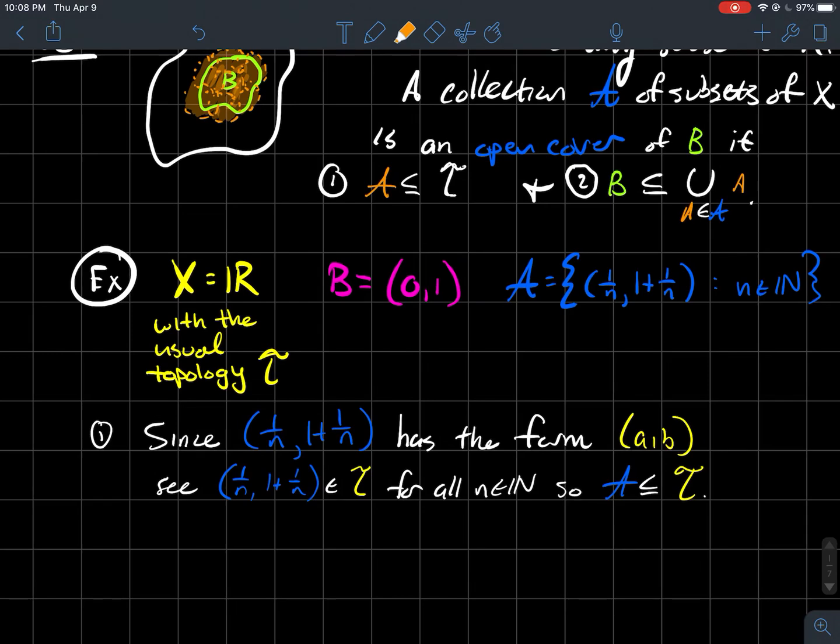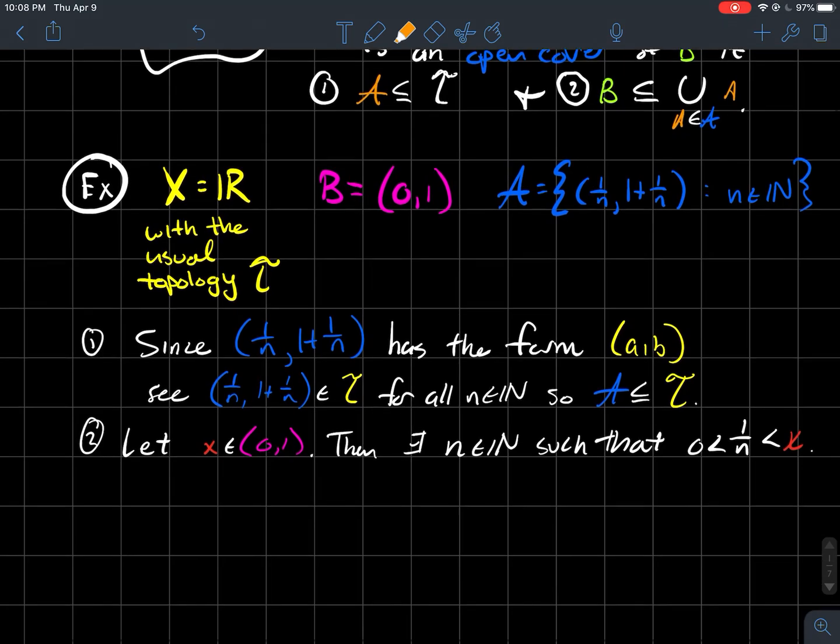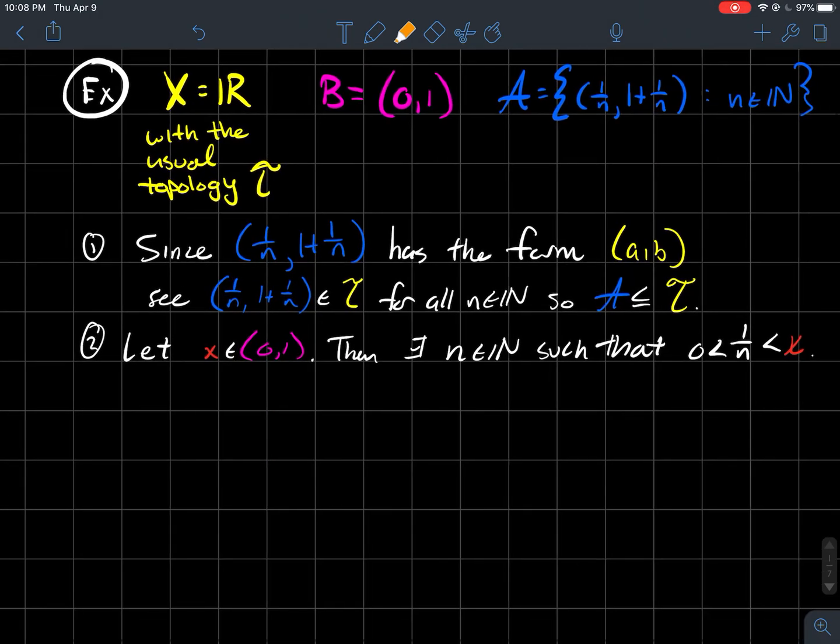Now we'll check number two. Why should B, which in this case I've labeled as pink, why should that be contained in the union of a bunch of elements of the big fancy set A? So how we would show that is, well, let's pick an element of B. Let's let X be in zero, one.